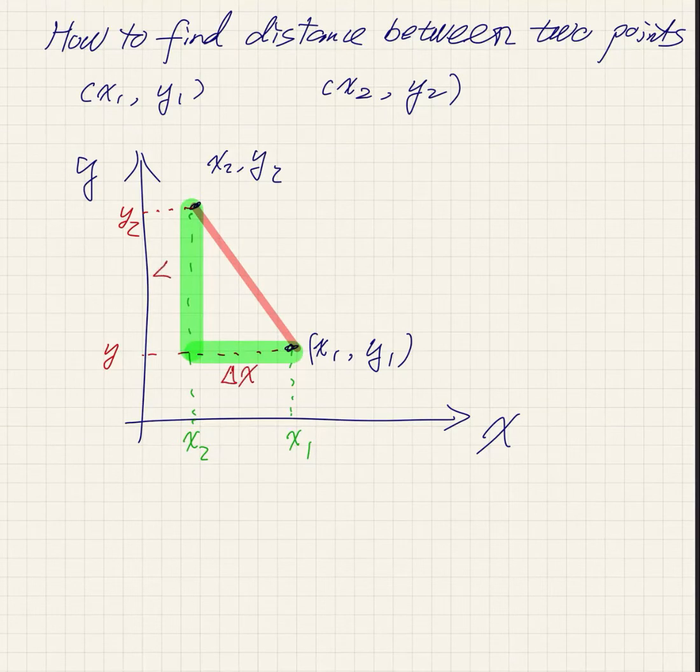The length of one side is delta x, the other side is delta y. The red line is the distance between the two points that we need to find.